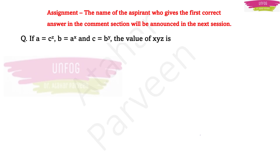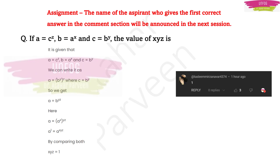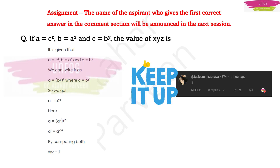The question was: if a equals c to the power z, b equals a to the power x, and c equals b to the power y, find the value of xyz. The answer is 1, and many of you answered correctly. The aspirant who gave the first correct answer in the comment section was Taslim Mirza — keep it up, Taslim! We are proud of you. The answer is correct. Very good.